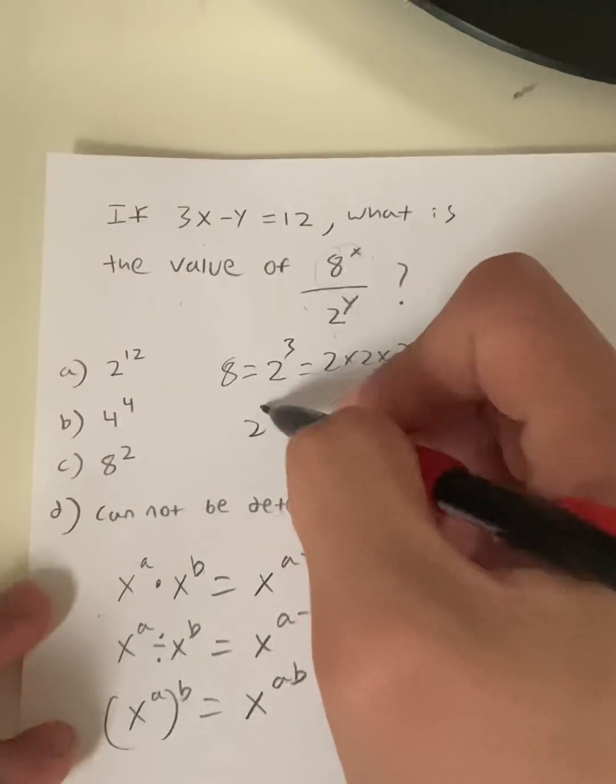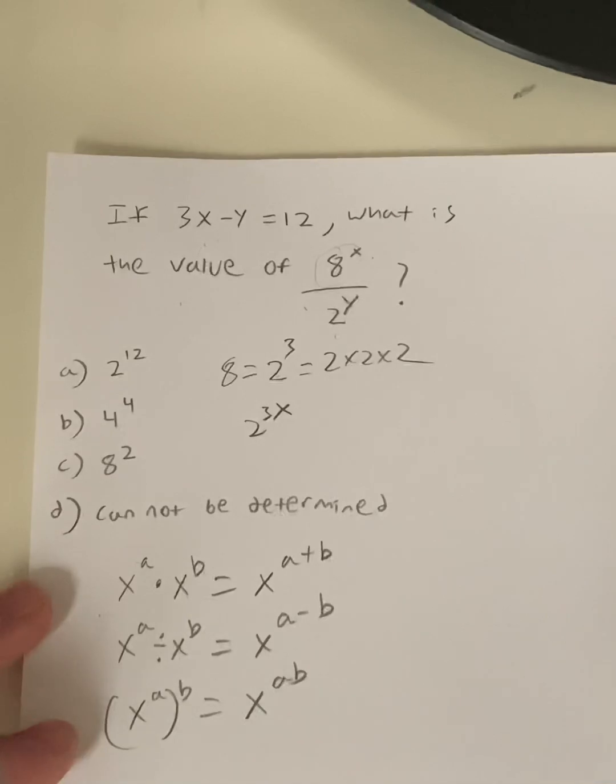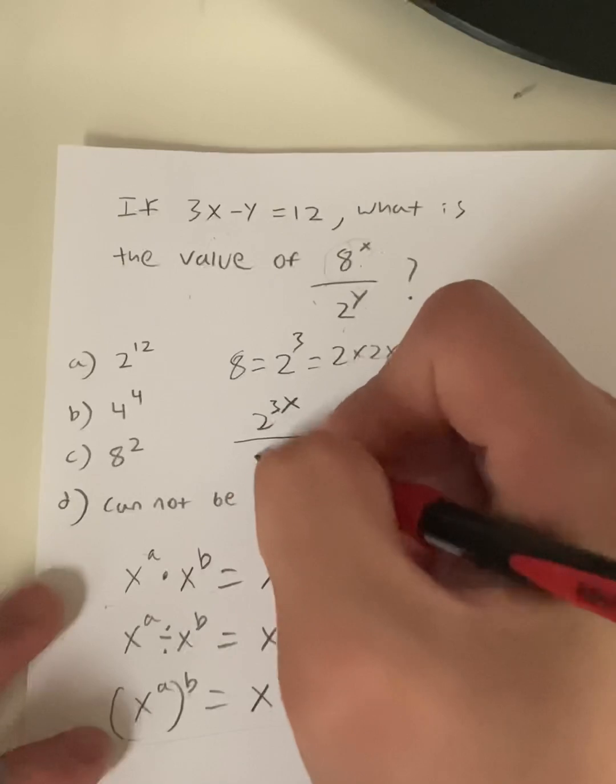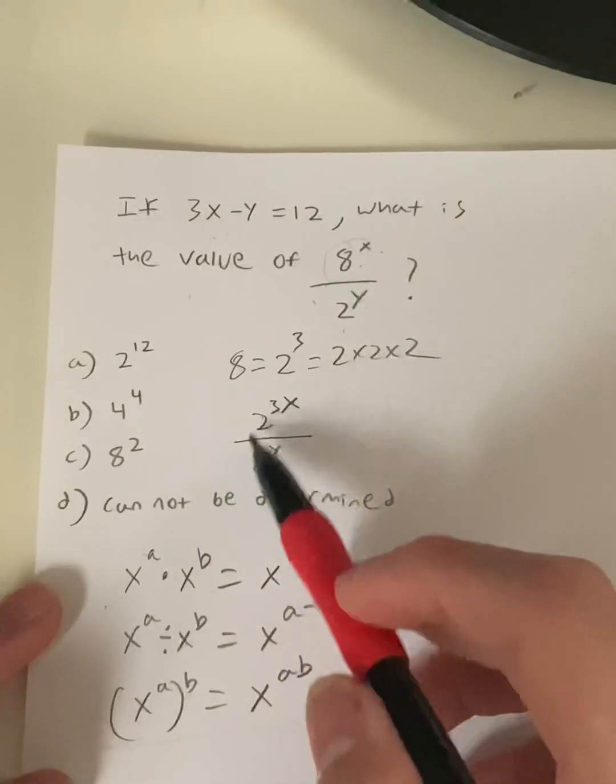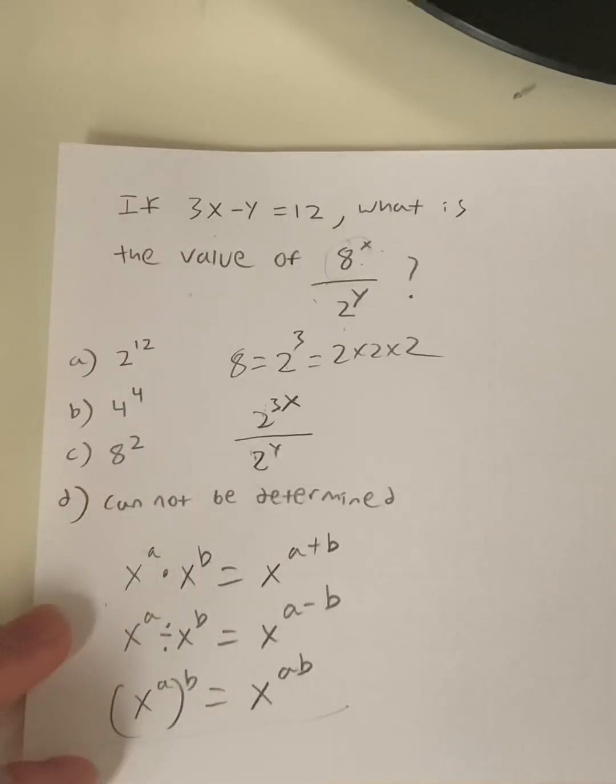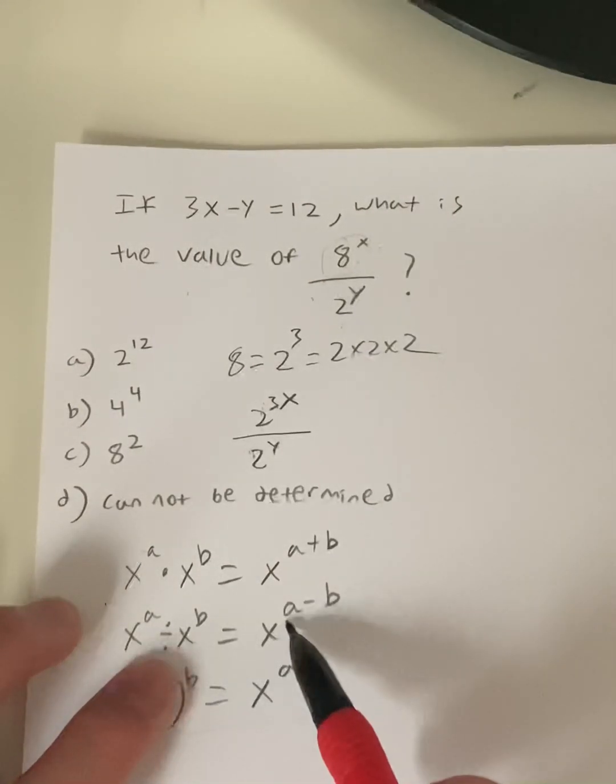It's going to be 2^(3x), right? 8^x equals 2^(3x). We're going to use this rule right here: 2^(3x) over 2^y. We have the same base, 2. When we have the same base, we can subtract our exponents.